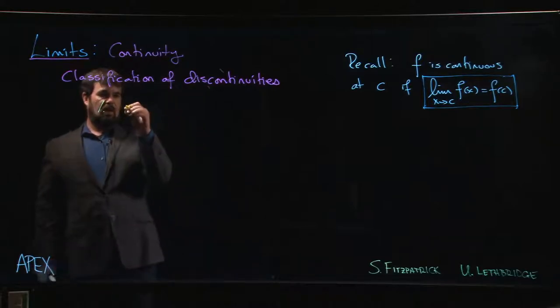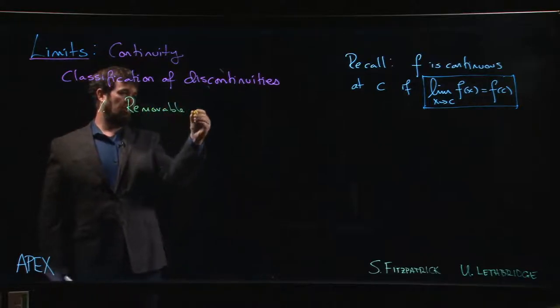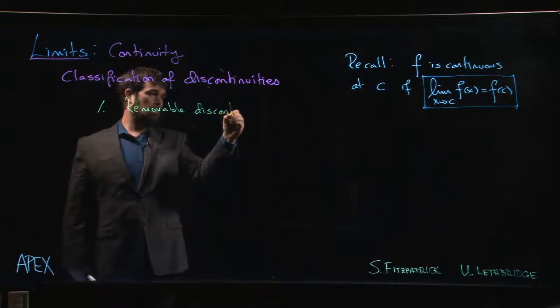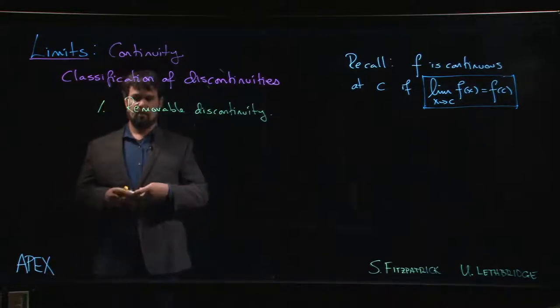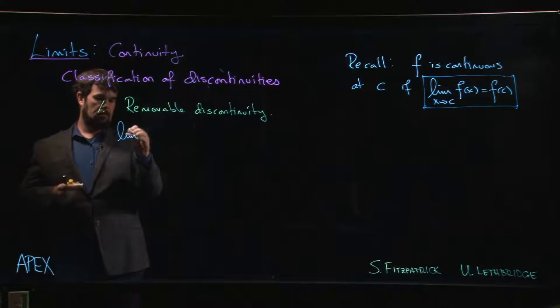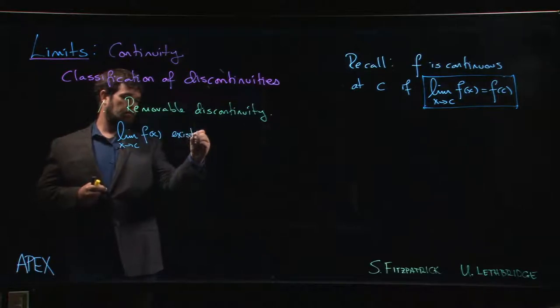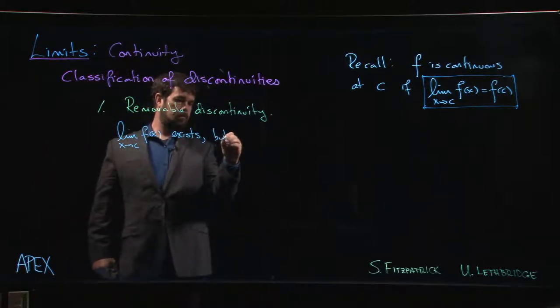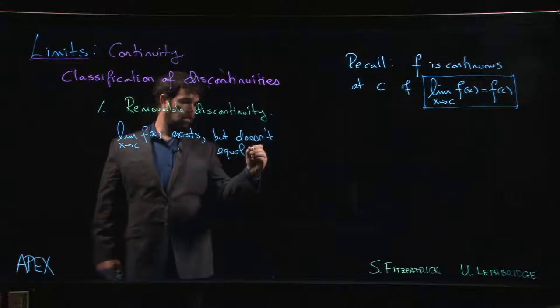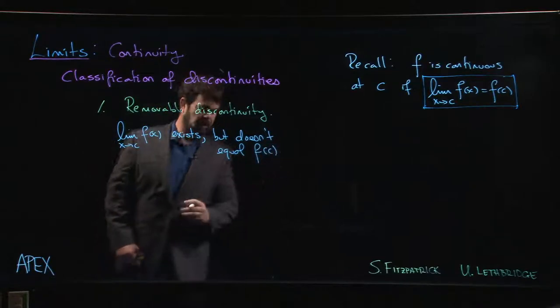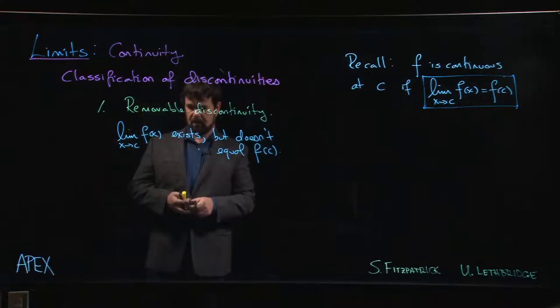The easiest one to handle is what's called a removable discontinuity. In a removable discontinuity, this means that the limit exists but it doesn't equal f of C. It might be that f of C is in fact undefined, or maybe it is defined but it's defined differently.